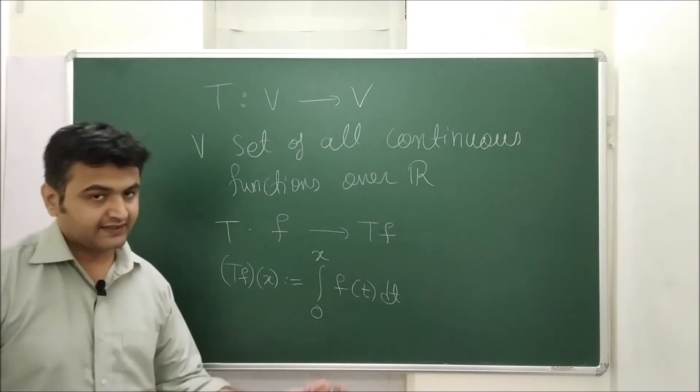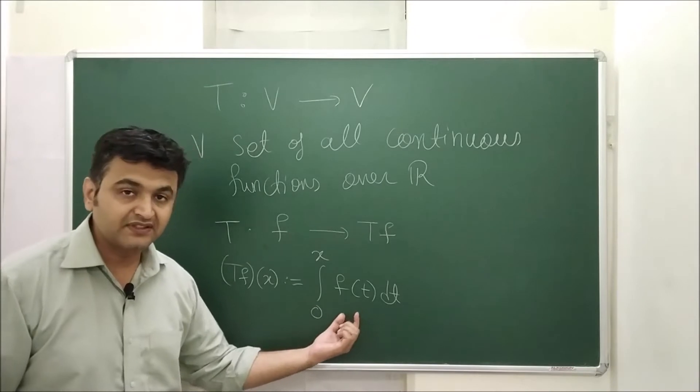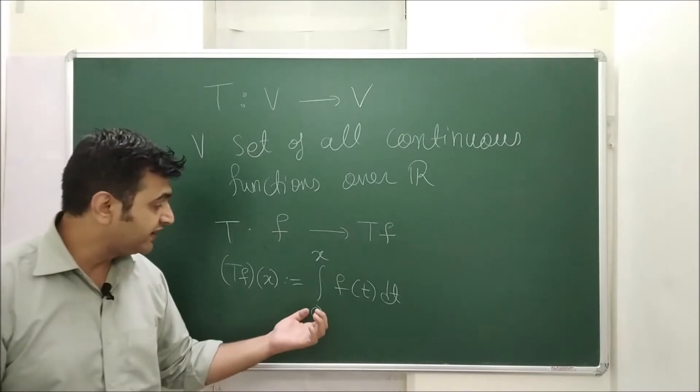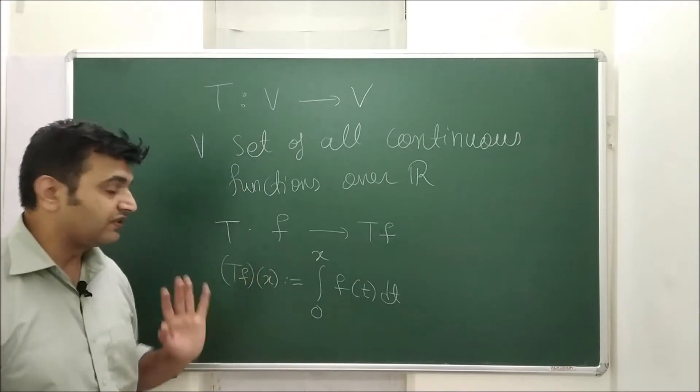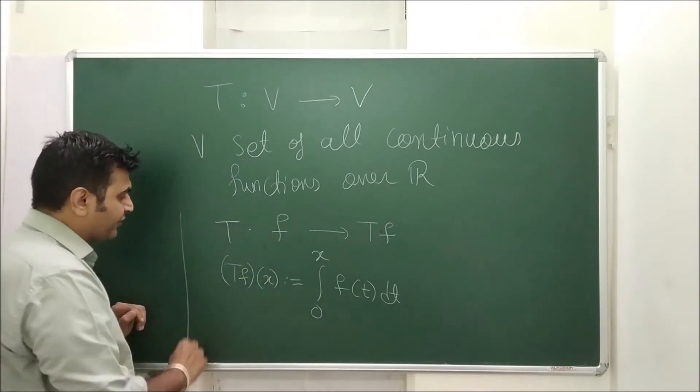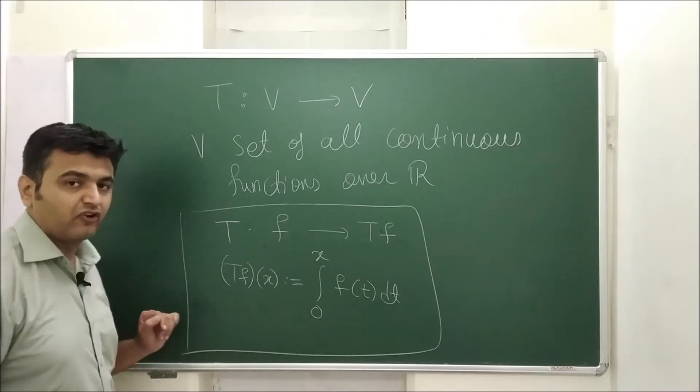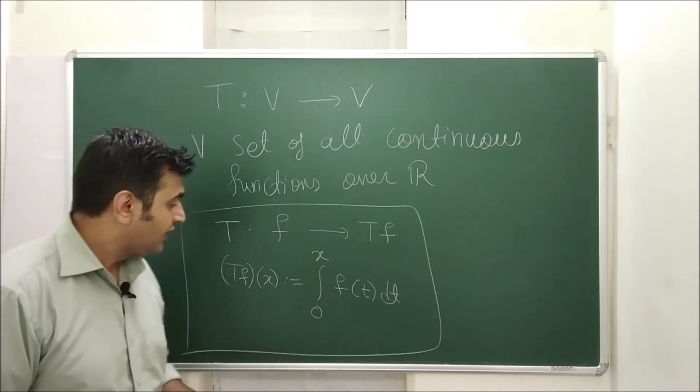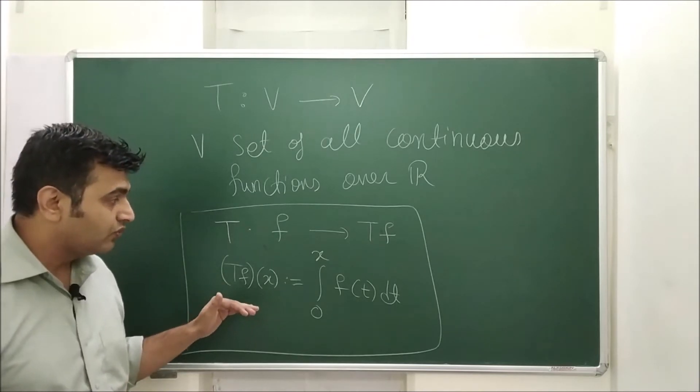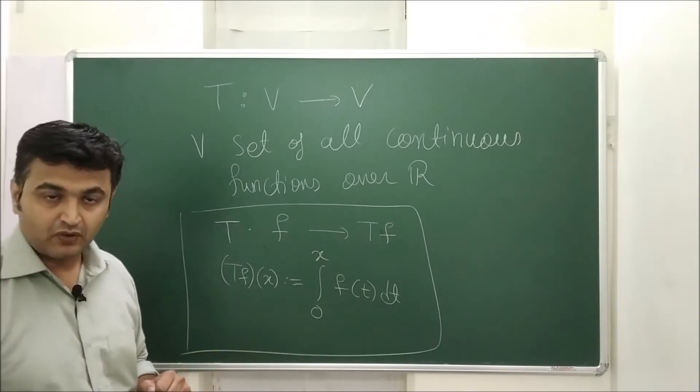So you take a function and you simply integrate from 0 to x. Does it exist? Yes, because f is continuous. So by Riemann theory we know that integration of continuous function do exist. So this is what the function we are defining and this particular example I have seen in the book of Hoffman and Kunze and so I thought of sharing with you all. So we'll show that this has no eigenvalues.